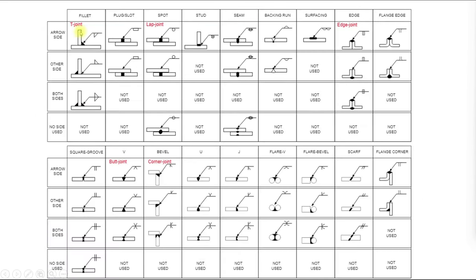This is just to represent how weld details look — I will put this PPT in the video description for you to practice and learn. For fillet welds: if the weld is on the near side, the weld symbol will be below the arrow line. If it is on the far side, it should be on the opposite side of the arrow line.